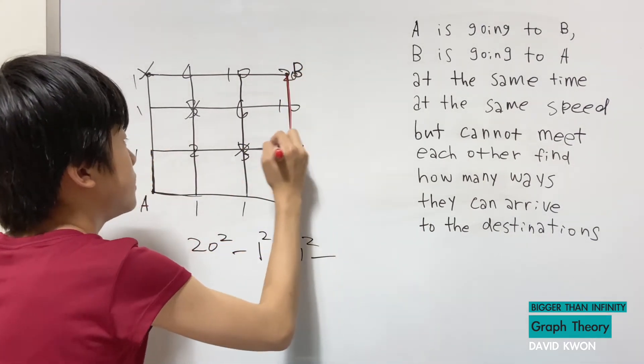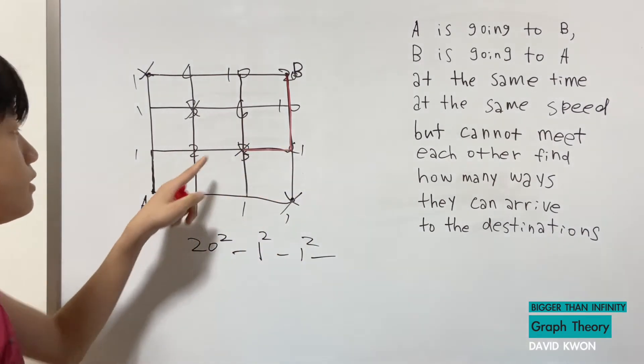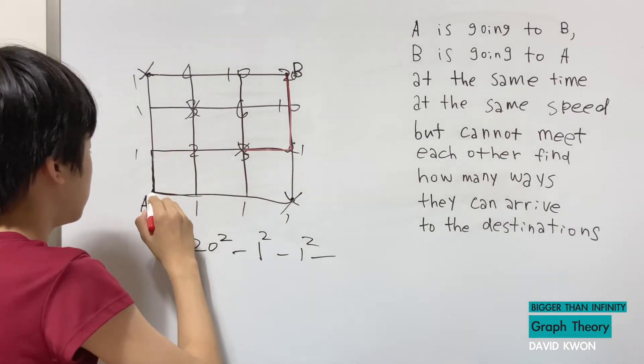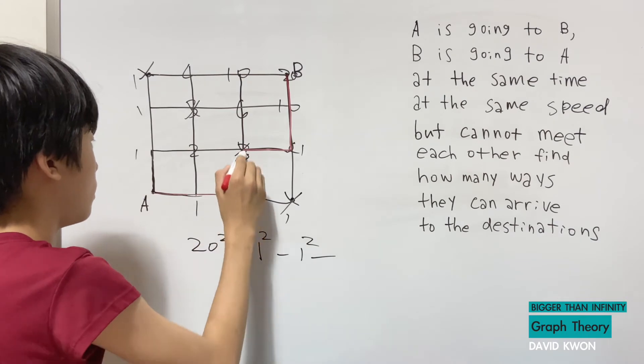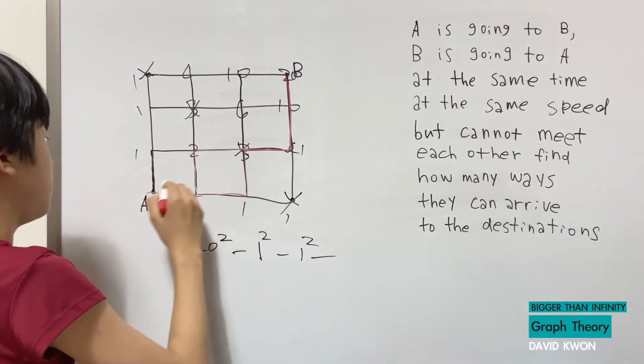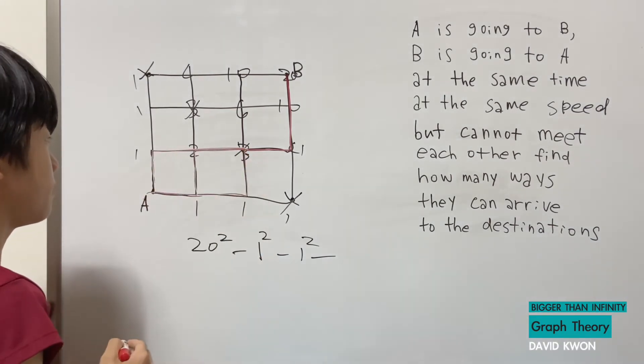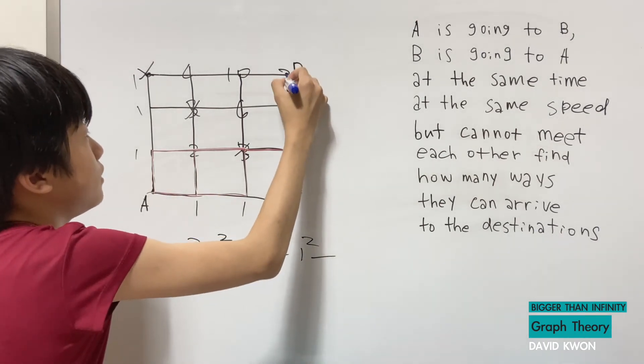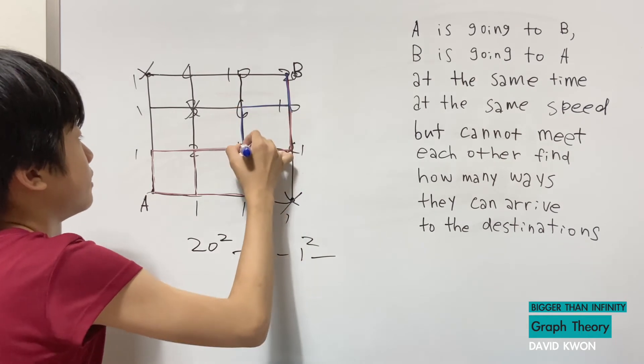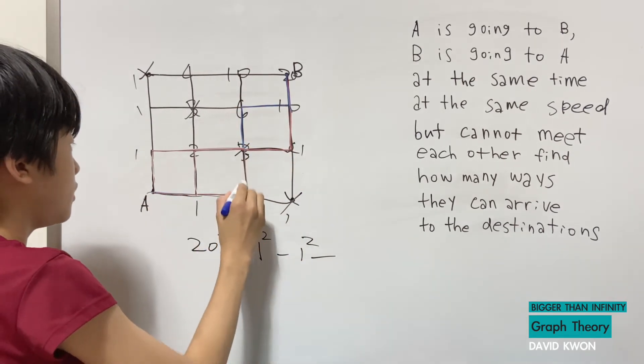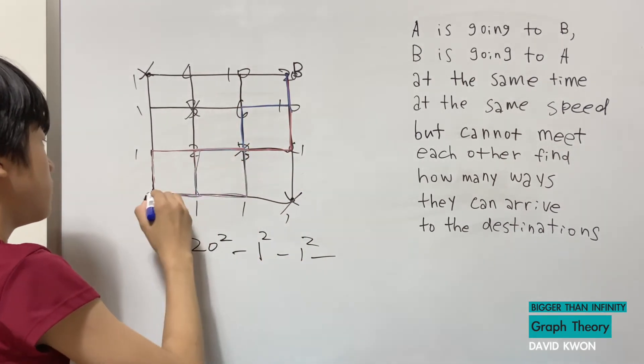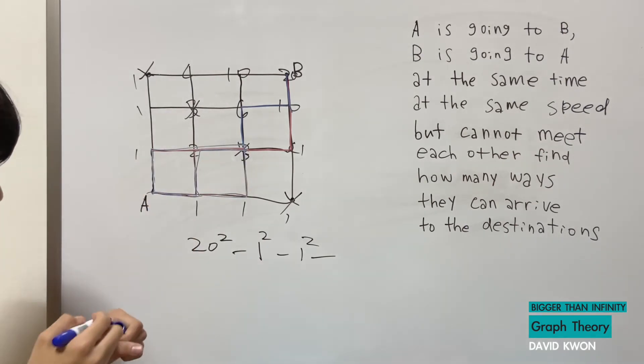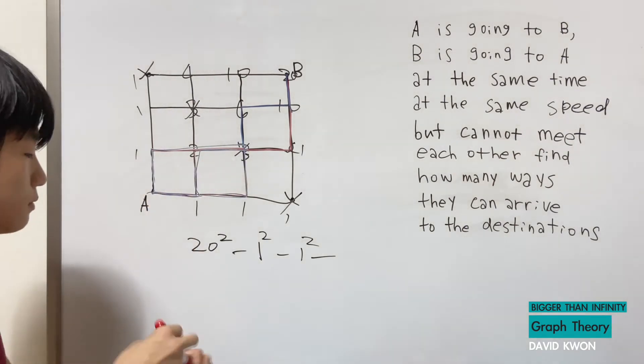so if B goes like this, I will use a different color, if B goes like this then how many ways can A go here? Well let's count it one two three so now that was three. If B takes this path it can go here here and here.